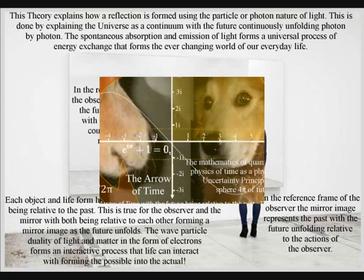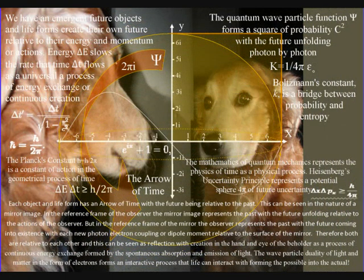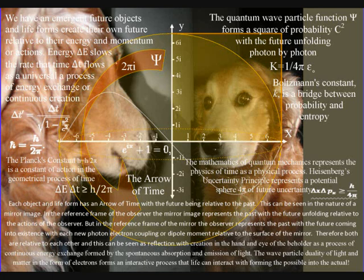Each object and life-form has an arrow of time, with the future being relative to the past as a process of cause and effect. This can be seen in the nature of a mirror image. In the reference frame of the observer, the mirror image represents the past, with the future unfolding relative to the actions of the observer.